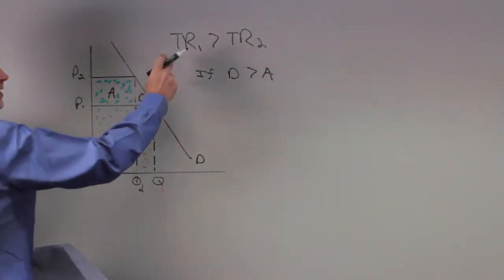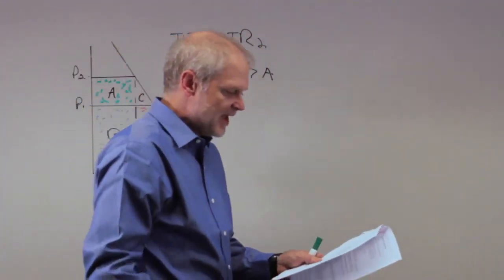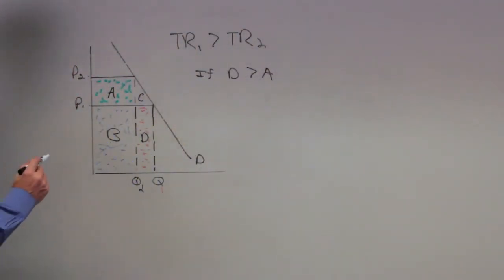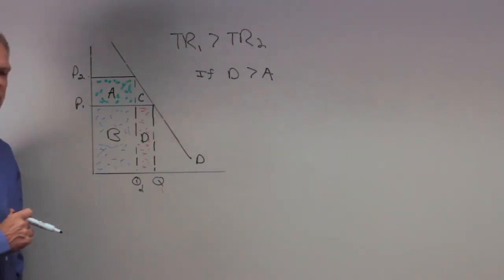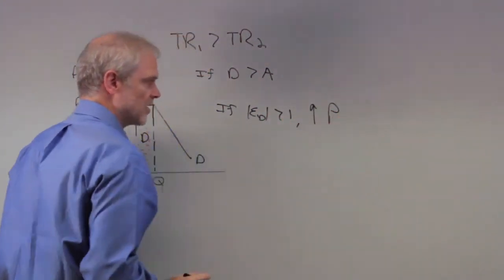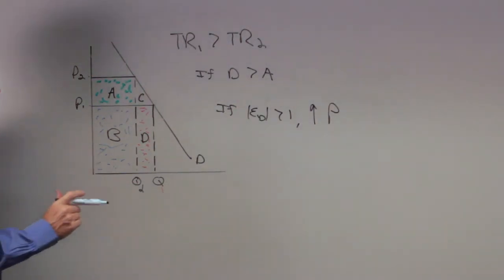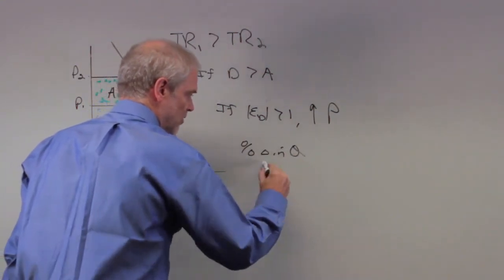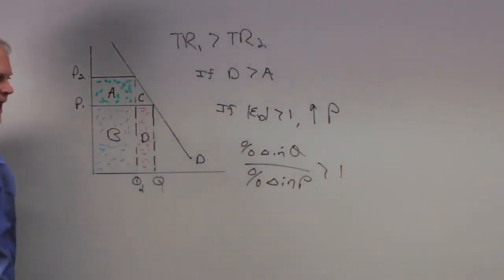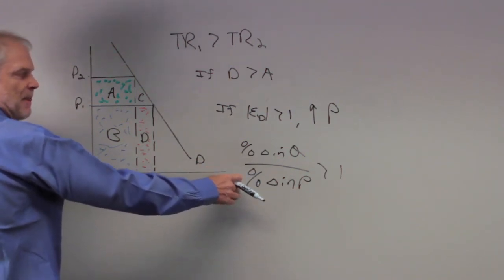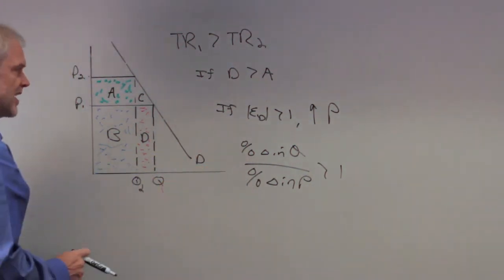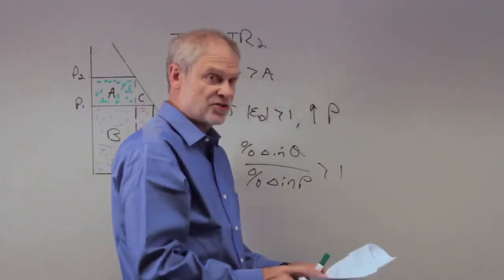Since this area exceeds this, then TR1 exceeds TR2. What are they saying? Demand is elastic between prices P1 and P2. If elasticity of demand is greater than one and you increase price, what happens to total revenue? Total revenue is going to fall. Why? Because the percent change in Q over the percent change in P is greater than one. That means when you increase price, the decrease in quantity demanded has to exceed that percent change in price, and therefore your total revenue is going to fall.